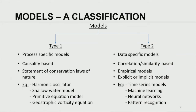Models in general can be classified into two types. Type 1 is called a process-specific model. Type 2 is called data-specific models. Concentrating on Type 1 models: here we understand the underlying scientific process that is at play. These are developed based on causality — if there is a force, there is a reaction to that; it is always a cause-and-effect relation. In sciences, many of these causal relations are nicely captured in the form of conservation laws.